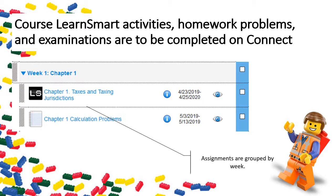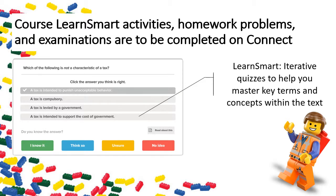Within Connect, you'll see the expected LearnSmart and calculation problems for each week. Refer to your syllabus for due dates. The LearnSmart activities are iterative quizzes that help you master key terms and concepts. You can complete them as you work through the material, or read the chapter first and then complete them. If you miss too many questions from a given concept area, the textbook will send you back to the reading to find what you're missing.